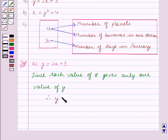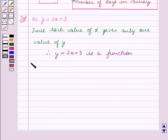Therefore y equals 2x plus 3 is a function. So this is our answer for part A. Now in part B we are given x equals y squared plus 4.